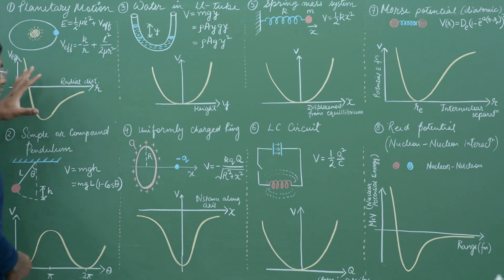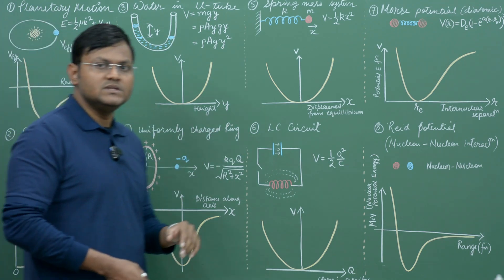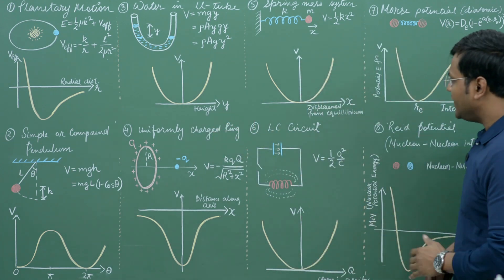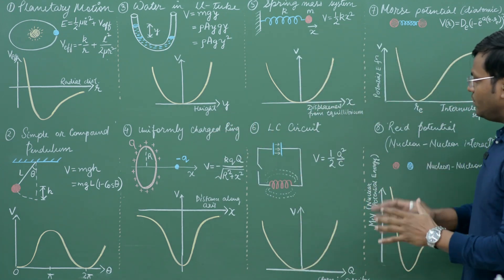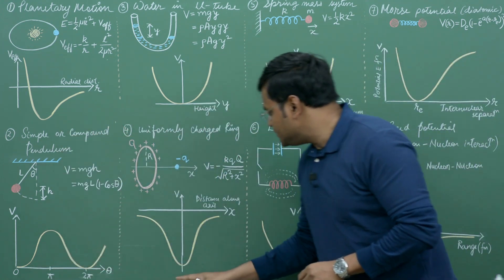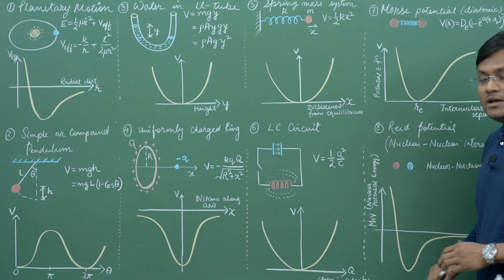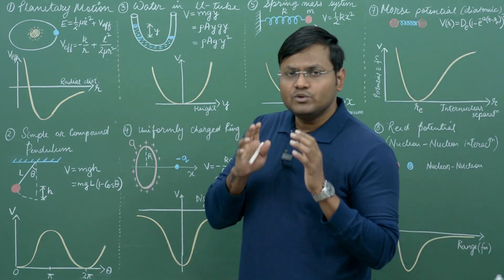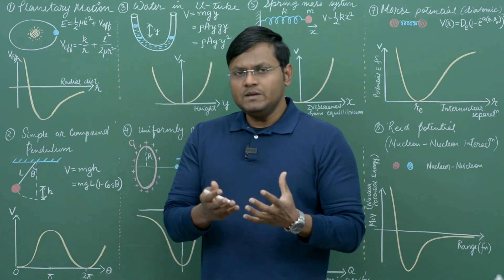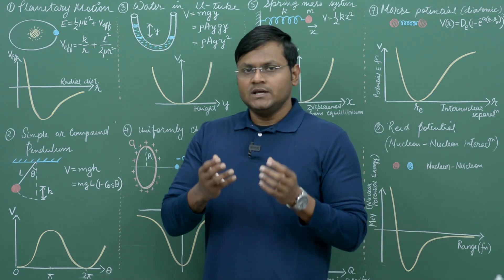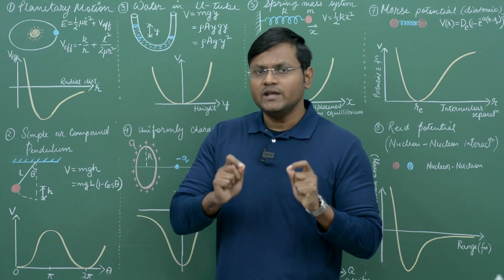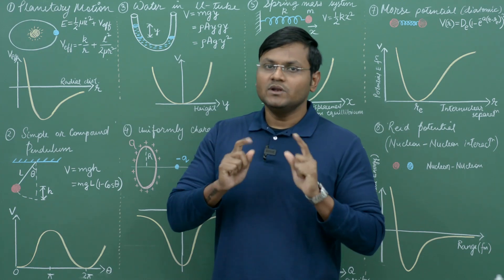So here I have drawn before you, from the subatomic and microscopic up to planetary systems, a large number of examples which have something very common in them. If you look at the potential energy function, each of them has a minimum. Every single potential energy function has a minima associated with it. Whenever you have a minima in the potential energy function, you can always approximate that physical system to behave like a harmonic oscillator under small displacements.